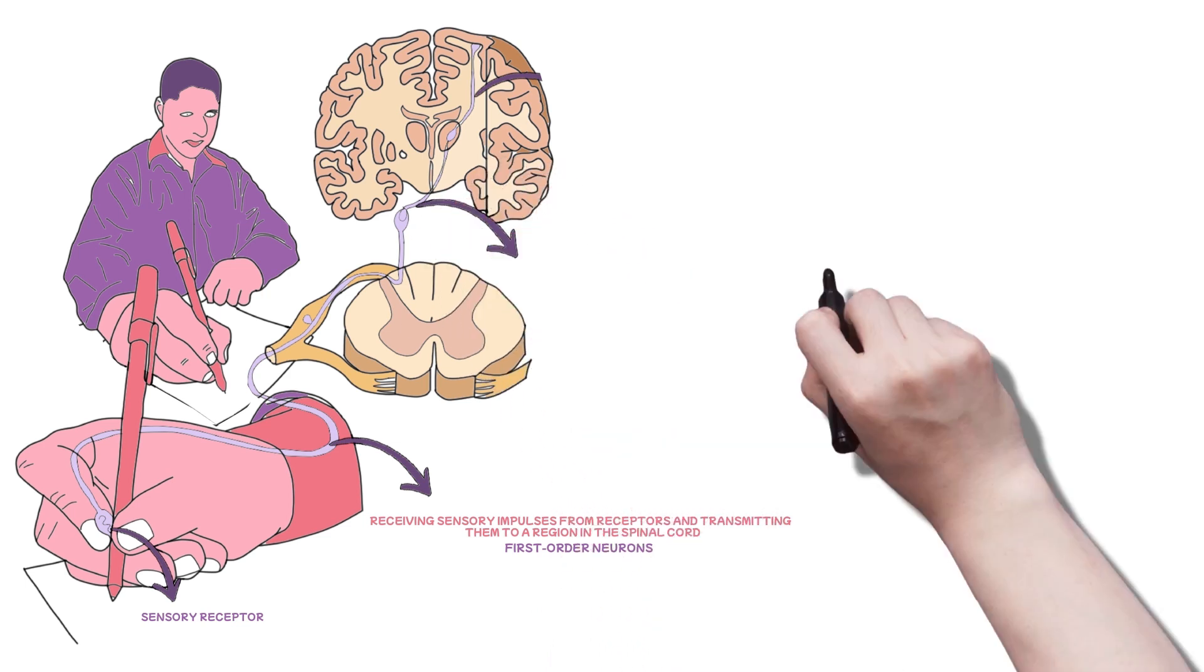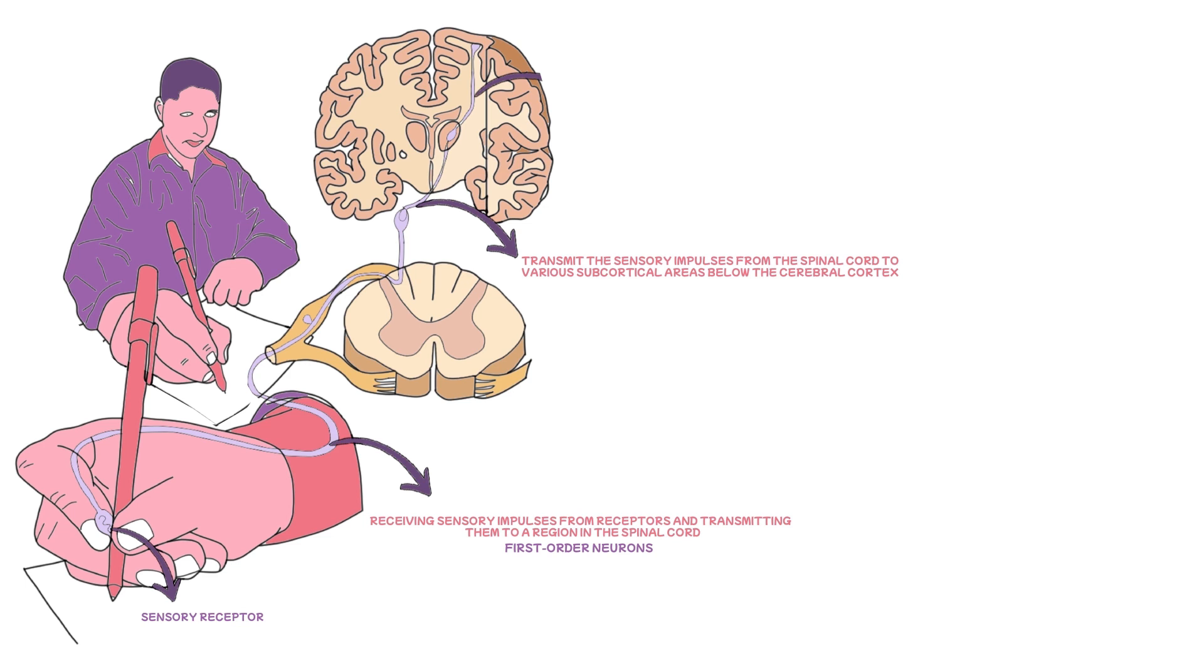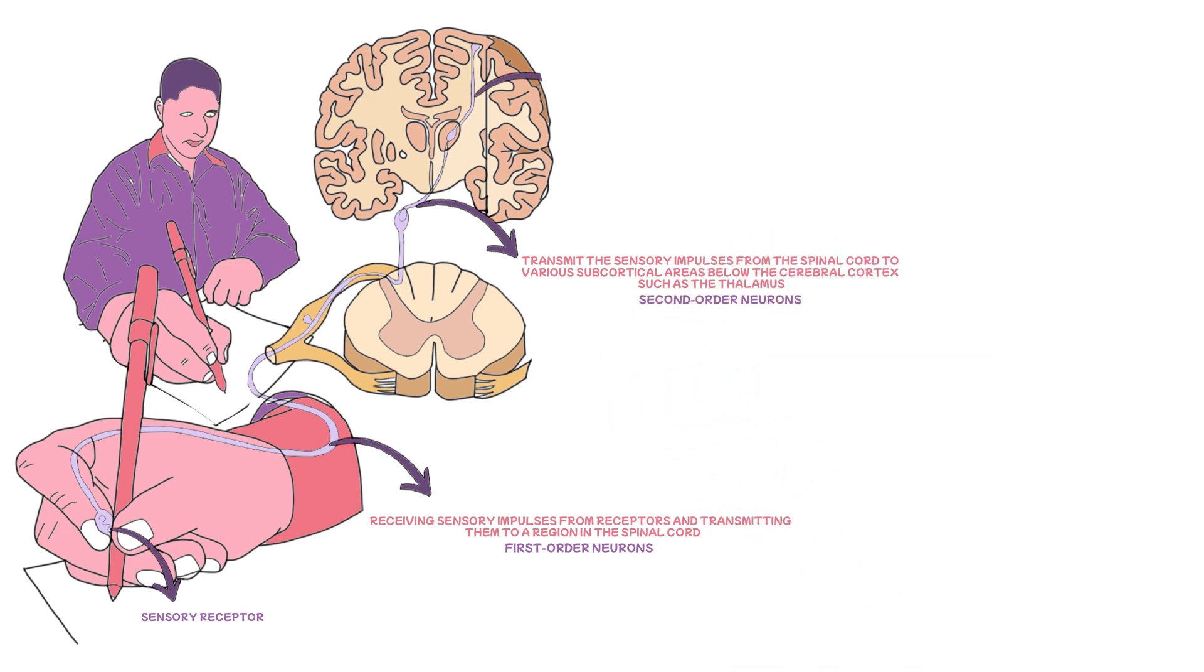Second, are those that transmit the sensory impulses from the spinal cord to various subcortical areas below the cerebral cortex, such as the thalamus. They form the ascending tracts of the spinal cord and are referred to as the second-order neurons.